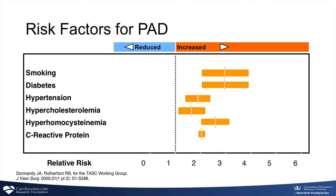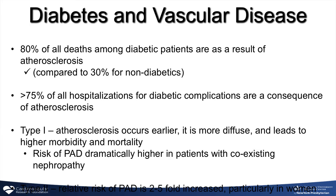The major risk factors include diabetes. If you think about magnitude of risk, smoking and diabetes confer the greatest amount of risk for developing PAD. Diabetes is one of the principal risk factors. Diabetic patients are predominantly afflicted by atherosclerotic vascular disease — over 75% of all hospitalizations of diabetic patients with complications result from atherosclerosis. Patients with type 1 diabetes have more diffuse disease and a dramatically higher risk of concordant nephropathy. There is a 2 to 5-fold excess risk of peripheral artery disease in diabetics, and women are at even higher risk.